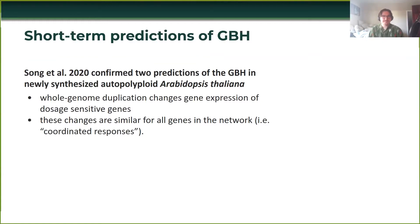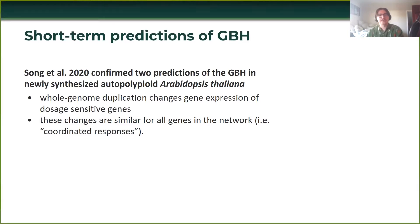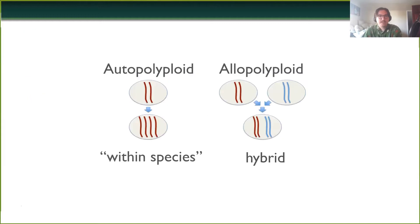The short-term predictions, most prominently reported recently by Song et al. in 2020, confirm two predictions about the gene balance hypothesis in their samples of resynthesized autopolyploid Arabidopsis thaliana. The first finding is that whole genome duplication changes gene expression of dosage-sensitive genes — there needs to be a change in expression so selection can act on them in the long term. The second is that these changes should be similar for genes in the network: genes more likely to be dosage-insensitive should have a more coordinated expression response so that the stoichiometry of gene products can remain the same.